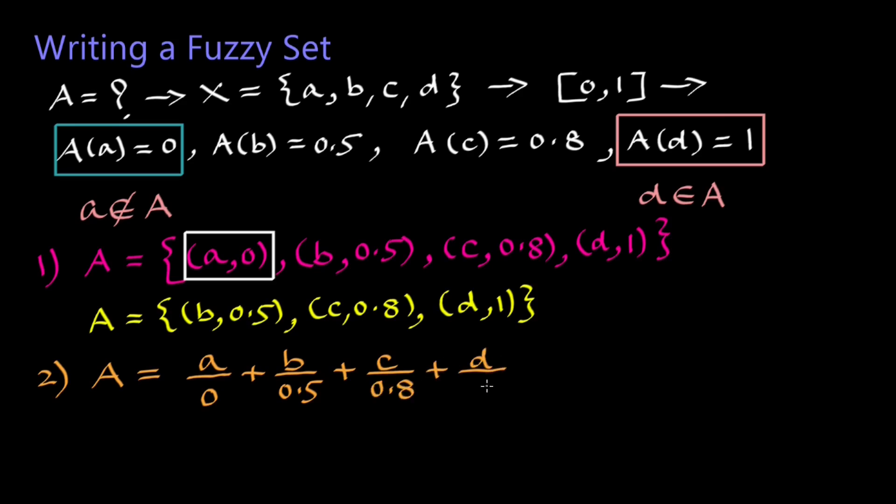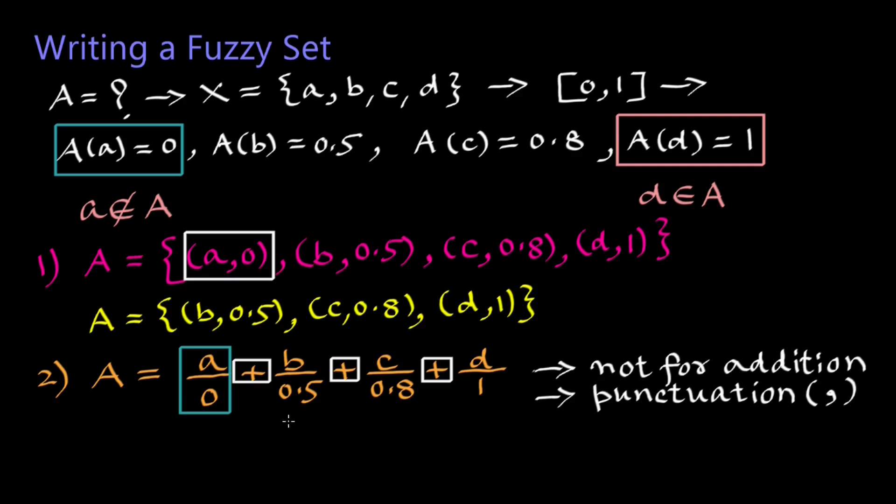Here these plus signs are not used for addition operation but as a mark of punctuation like a comma. Here also we can skip member A and its grade value 0 and rewrite fuzzy set A as 0.5/B + 0.8/C + 1/D. So this is how fuzzy sets are written.